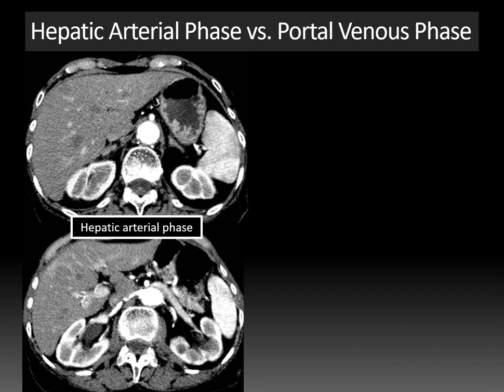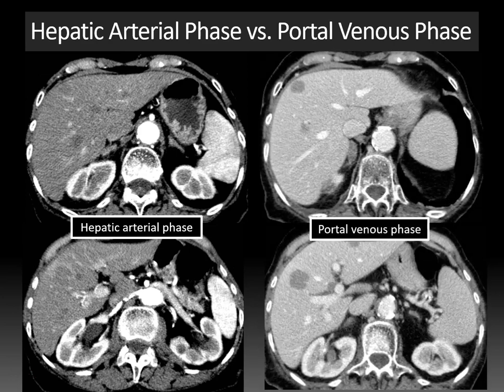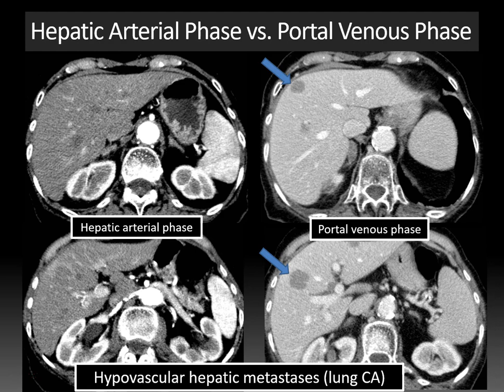Here's an example highlighting the difference between hepatic arterial and portal venous phase in detecting hepatic lesions. On the hepatic arterial phase images, the hepatic artery and portal vein are enhancing with no hepatic vein enhancement. But when we look at the portal venous phase, the hepatic veins are now enhancing along with the parenchyma — and look at all these hypovascular hepatic masses that were very difficult to see on the arterial phase, even in retrospect. This was a patient with lung cancer and hypovascular hepatic metastases — the portal venous phase is ideal for their detection.